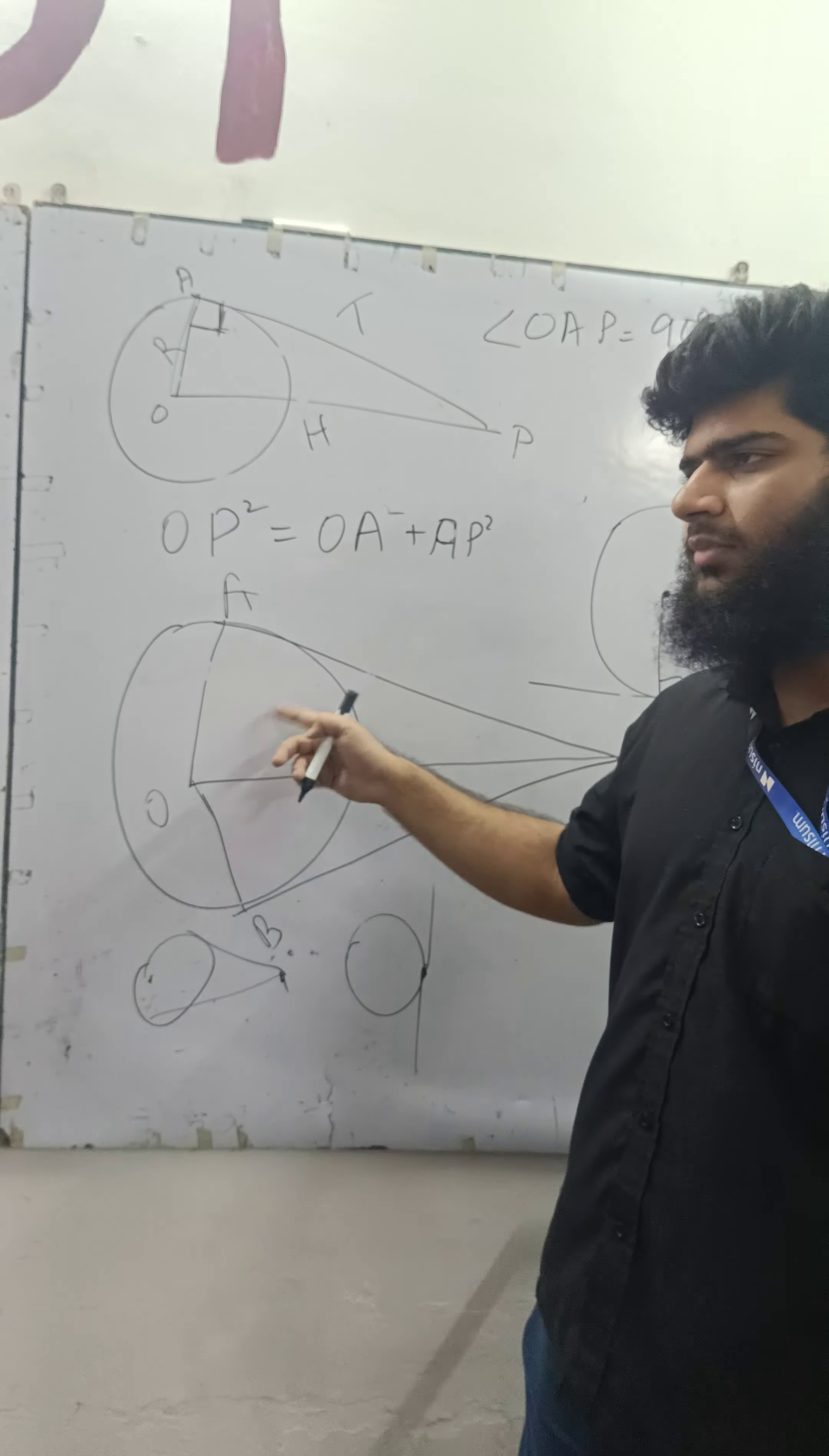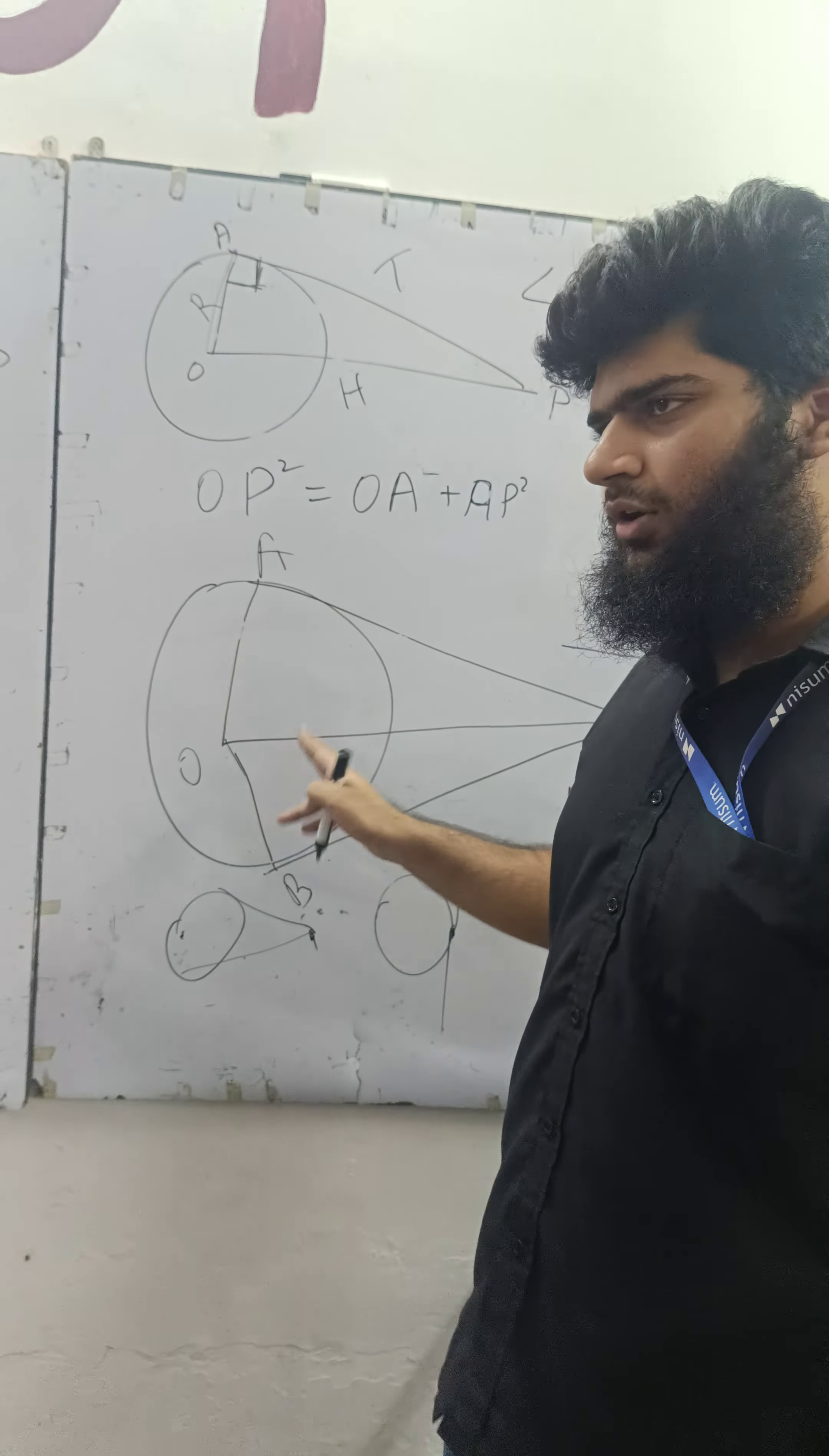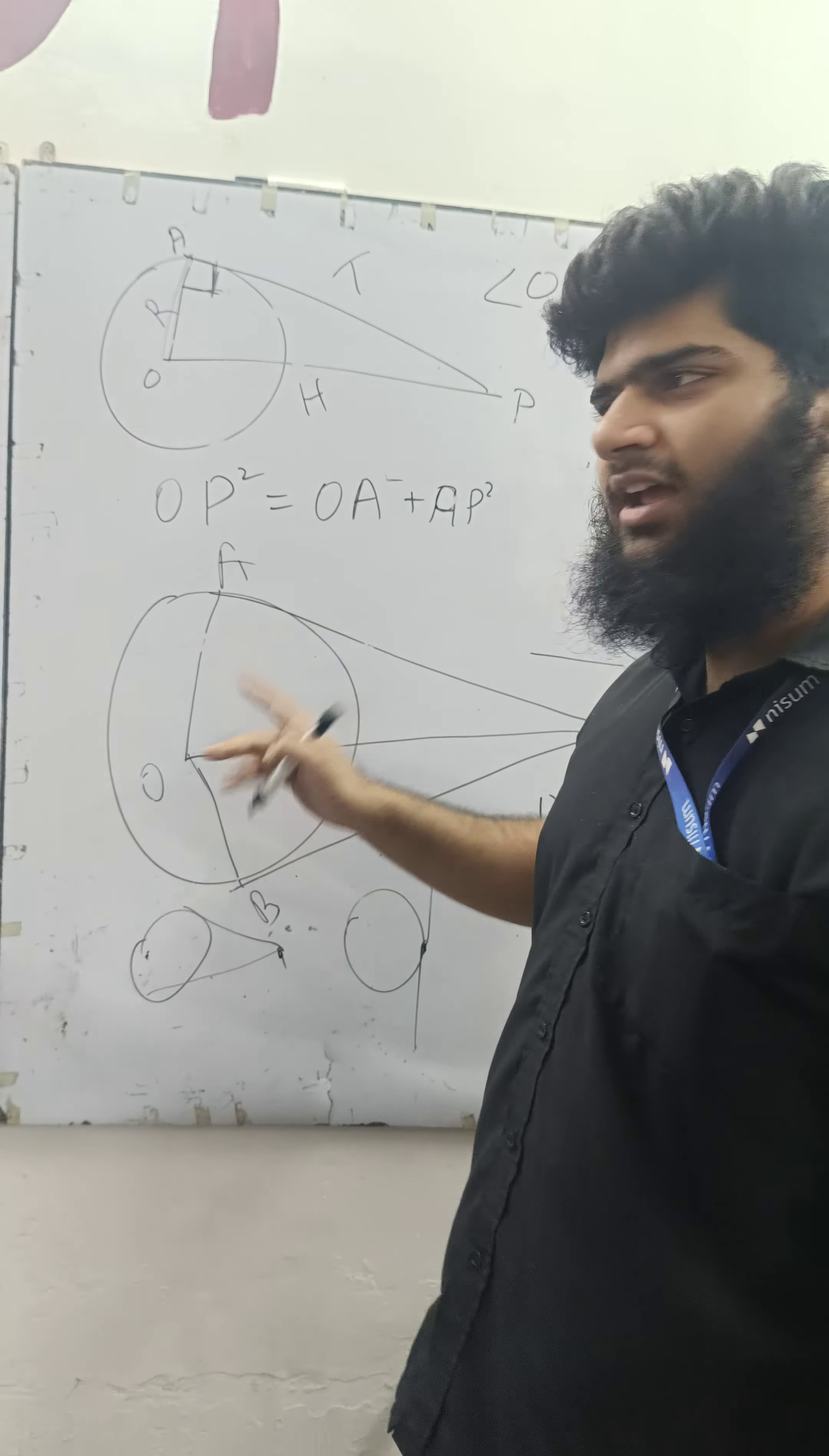It means triangle OAP is equal to triangle OBP. We don't know triangles. Similar here. Side, side, side property according. These two triangles are similar. It says similar triangles are very easy.